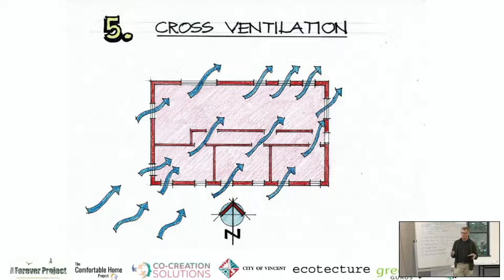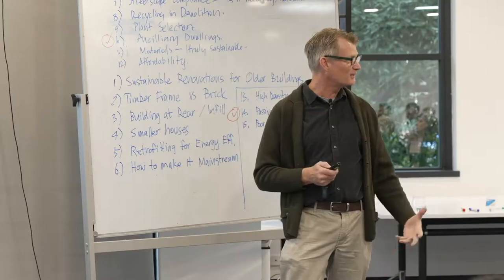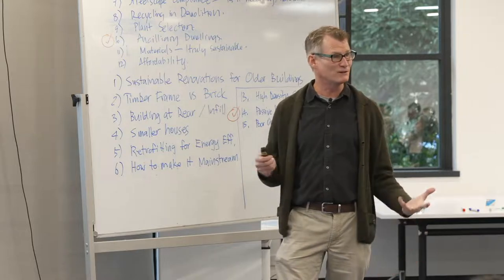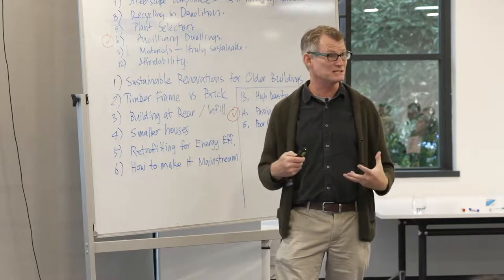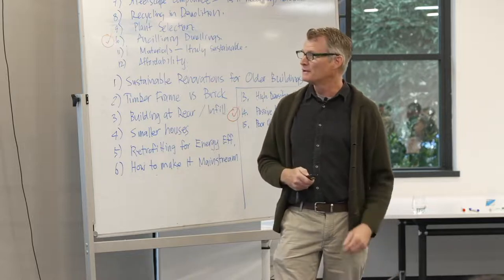Fifth is cross ventilation — openings at either side of the room that allow air to flow through. Key wind directions are southwest during the day, and at night in summer there are beautiful breezes from the southeast. I had a bedroom once with a window facing that direction and it was like air conditioning — it's amazing what the environment has to offer if you just think about these things when designing.